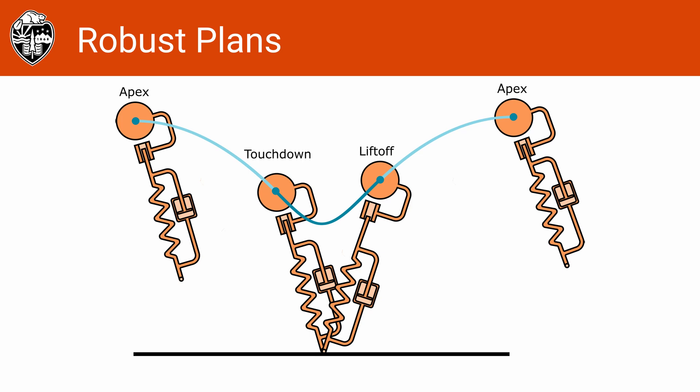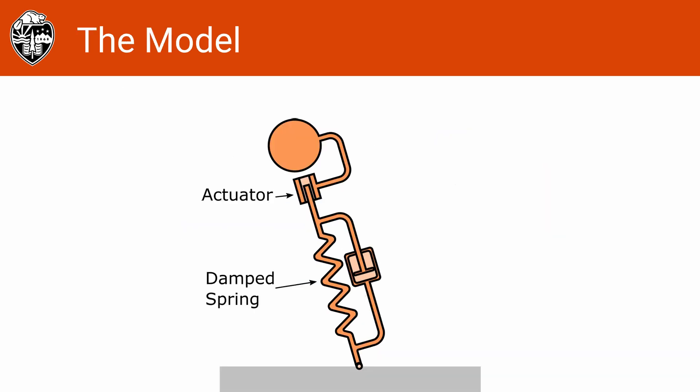To help answer this question, we developed a method of explicitly solving for motions that reject ground height disturbances without sensing and reacting for forward planar locomotion. For this work we are using the planar actuated SLIP model. This model has a point mass body and a single leg that consists of an extensible actuator in series with a damped spring.